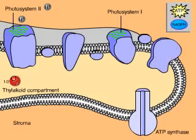Next, ATP and NADPH are used in the sugar-making process of the Calvin cycle.